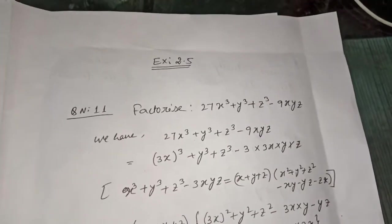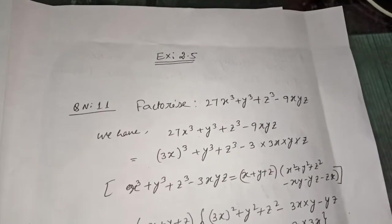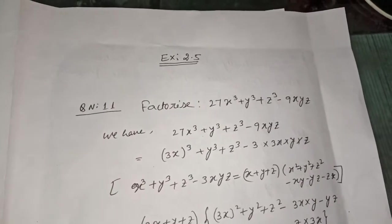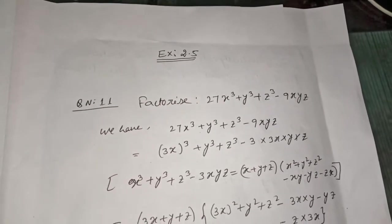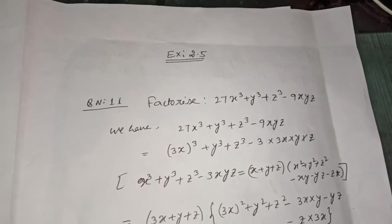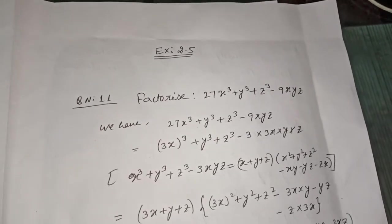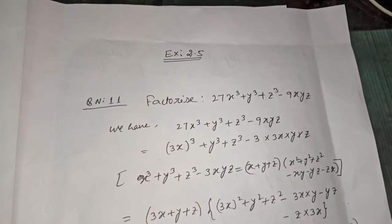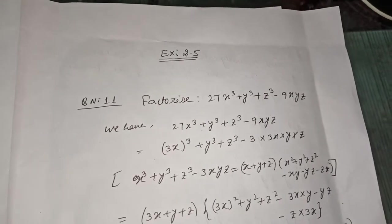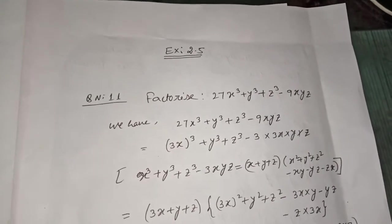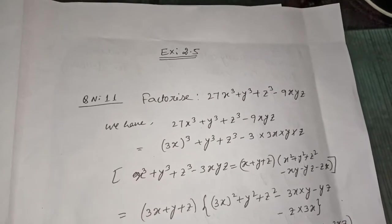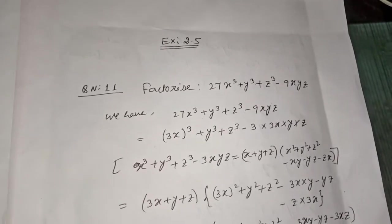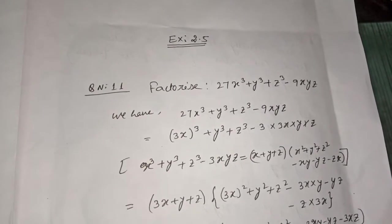Good morning students. In the last class we completed questions 9 and 10, and we revised the identities: x³ + y³ = (x + y)(x² - xy + y²) and x³ - y³ = (x - y)(x² + xy + y²).